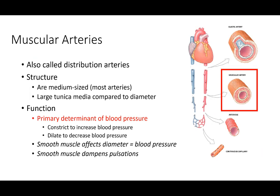Muscular arteries are the next step down — medium-sized arteries that are much more numerous in the body. They have a large tunica media relative to their diameter, making them very responsive to constriction or dilation. They are the primary determinant of blood pressure. When there is a signal causing constriction, because there are so many muscular arteries, even a tiny constriction multiplied across all of them produces a very profound change in overall blood pressure.